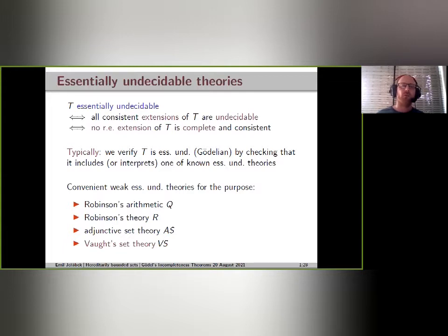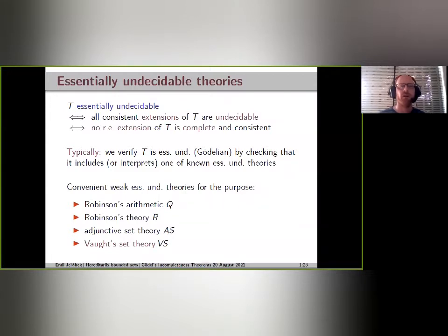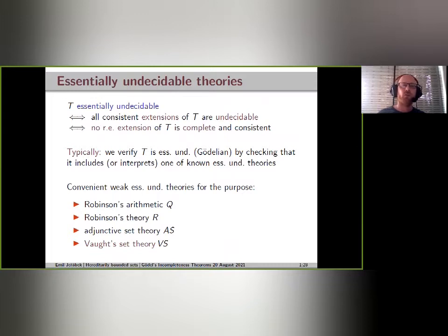Both of these theories are convenient when we want to apply them to theories of arithmetic, but they are not so convenient when dealing with, say, set theory. We can of course interpret some minimal arithmetic in set theory and check that it includes Robinson's arithmetic, but this requires some work. In such a context it is better to have a list of known essentially undecidable theories that are directly formulated in the language of set theory.